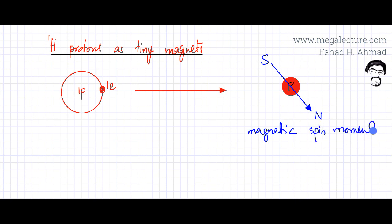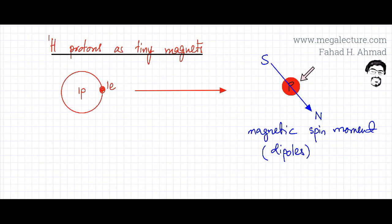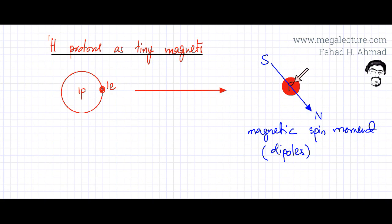This is also sometimes referred to as a magnetic dipole — it has a north pole and a south pole. So these hydrogen protons are acting as tiny magnets. If there's an atom containing hydrogen atoms bonded to it, its nucleus would be acting as a tiny magnet having a north pole and a south pole.